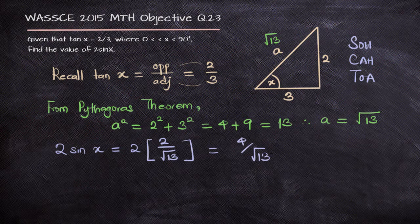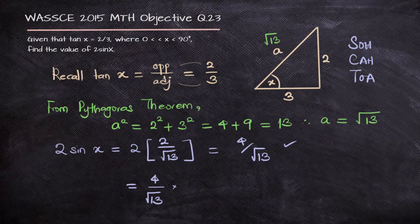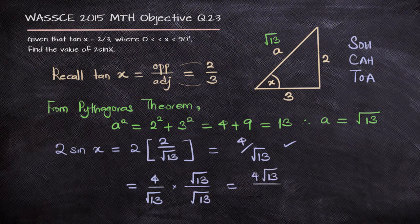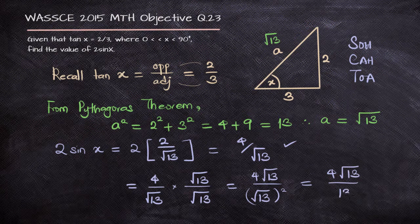This is the answer, but interestingly it is not in any of the options given. So we carry out the rationalization by multiplying both the numerator and denominator by root 13. This gives us 4 root 13 over root 13 squared, and the square cancels out the root so that we have 4 root 13 over 13. This option is in the options given, and that is the correct answer.